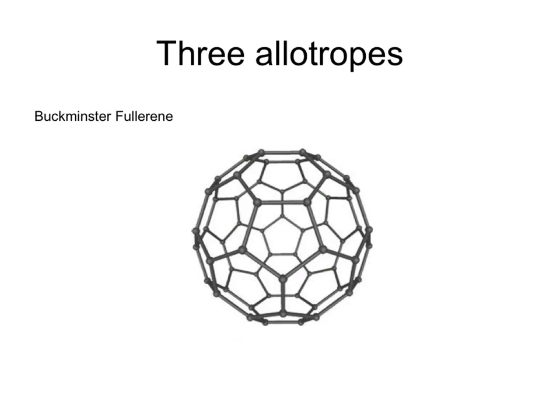Buckminster Fullerene is very different. It has 60 carbon atoms arranged in a ball, and there are various other fullerenes with different numbers of carbon atoms in balls. That's a simple molecular structure.